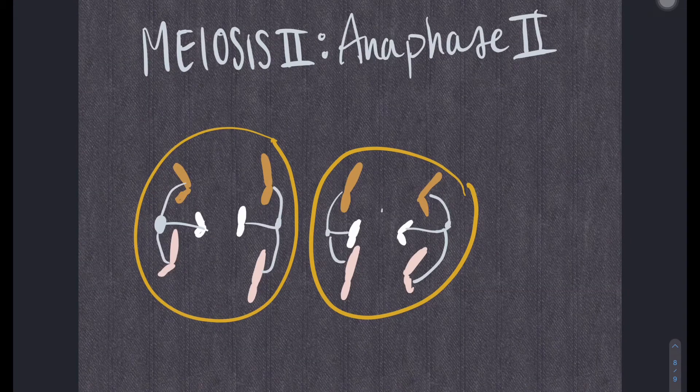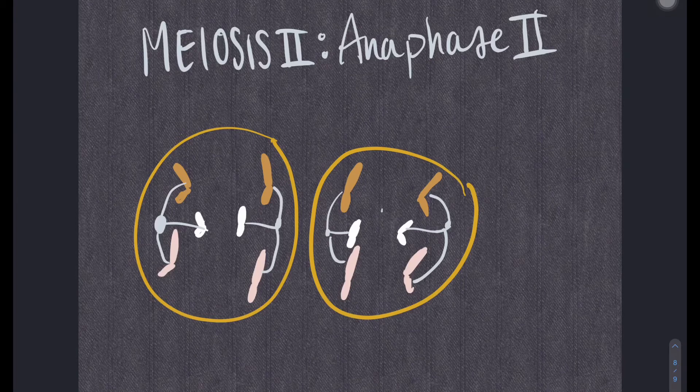Anaphase II is when the microtubules separate the sister chromatids, moving them to the opposite poles of the cell.